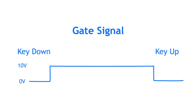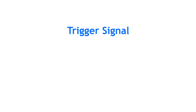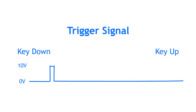Gate signals can also come from square wave LFOs or other voltage sources. A trigger signal is similar to a gate signal, but without the held voltage. A trigger signal jumps to a high voltage and returns to 0 volts quickly — it's just a quick voltage spike. Trigger signals are often used for clocks and drum sequencing.